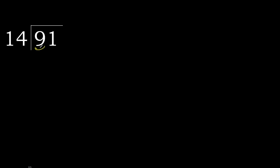91 divided by 14. 9 is less, therefore next. 91 is not less, so with 91: 14 multiplied by which number is nearest to 91 but not greater? 14 multiplied by 7 is 98, which is greater.